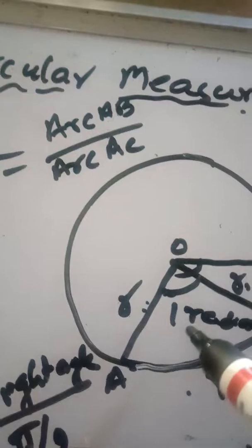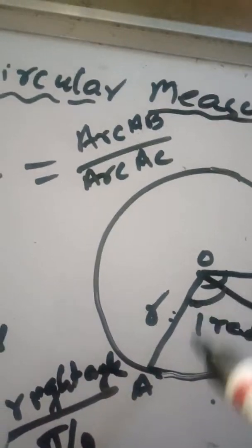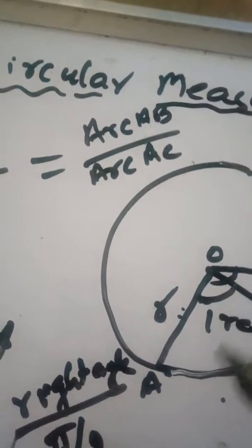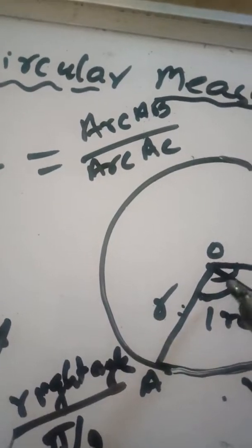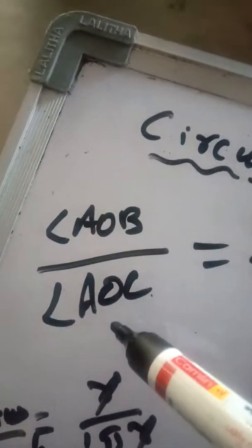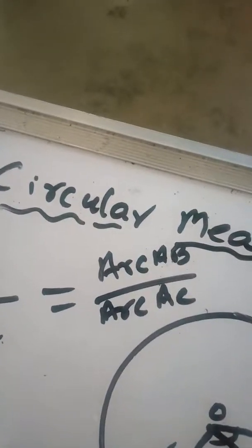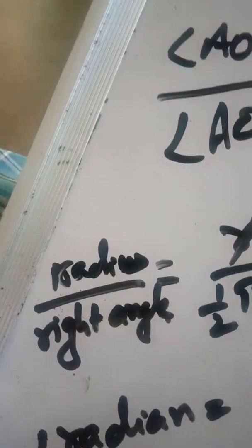Then this angle is called 1 radian. If I take angle AOC where AC is an arc for 90 degrees, then angle AOB divided by angle AOC equals arc AB divided by arc AC. So 1 radian divided by 1 right angle equals R divided by (1/2)πR.